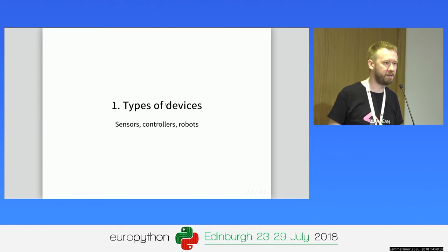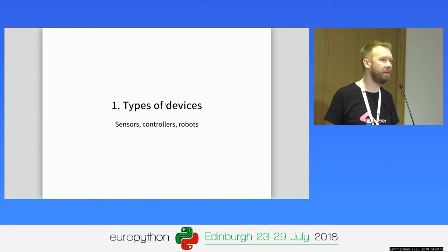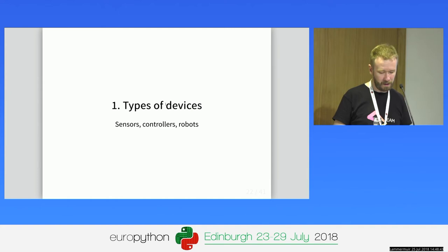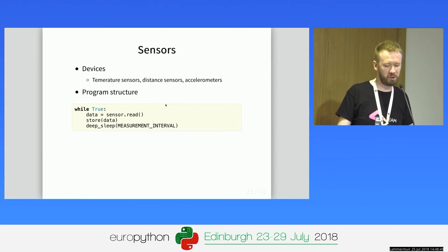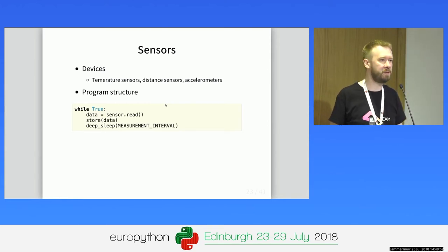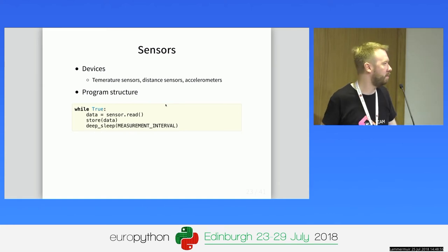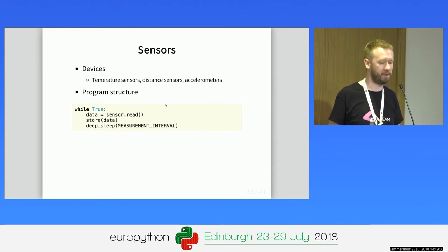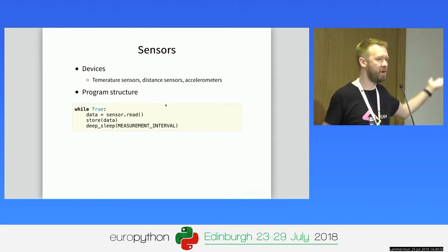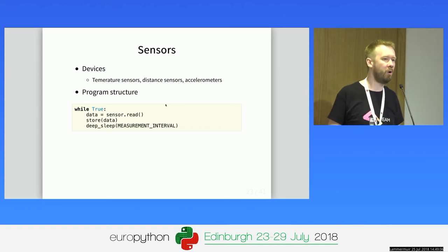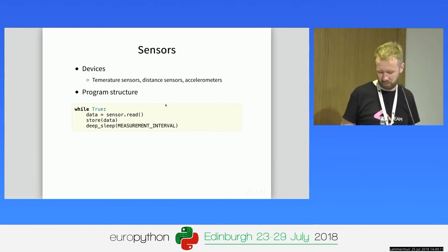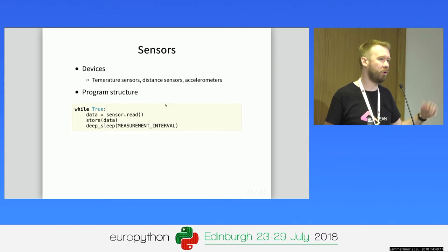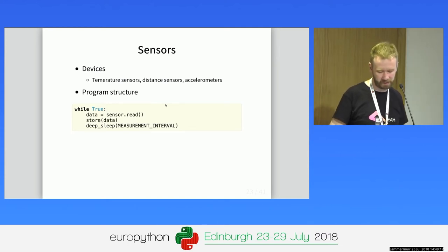Next, the types of devices. There are some types you might want to consider. People often create sensors with MicroPython devices — like temperature sensors, accelerometers, and so on. The typical program structure for a sensor looks like this: you have a while-True loop, because you are the only program running and it must run forever. Then you take a measurement from your sensor, store the data in memory, or send it via Wi-Fi if you're an IoT device, and then go to sleep until it's time to read the next portion of data.